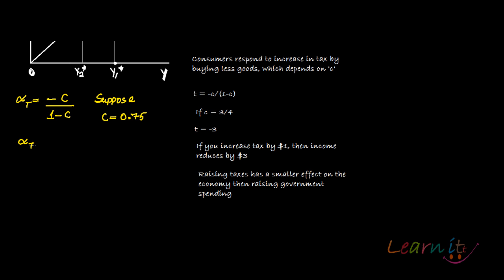Then tax multiplier you can calculate as minus 0.75 upon 1 minus 0.75, which is minus 0.75 upon 0.25, which is equal to minus 3.